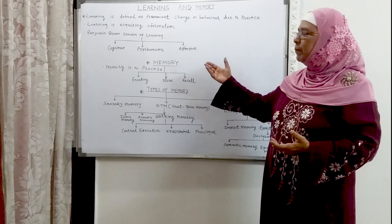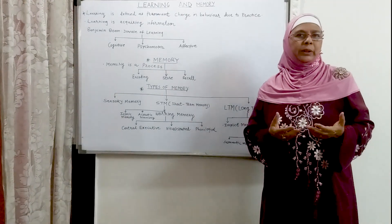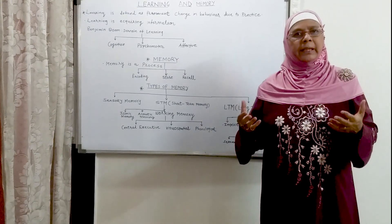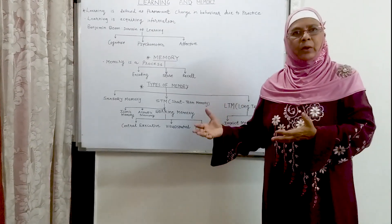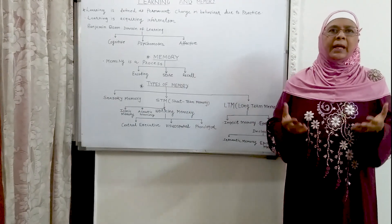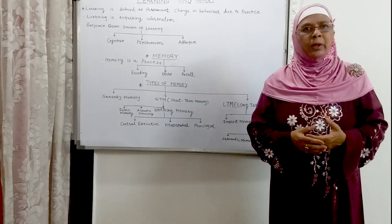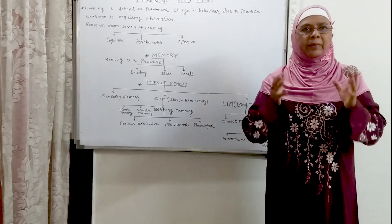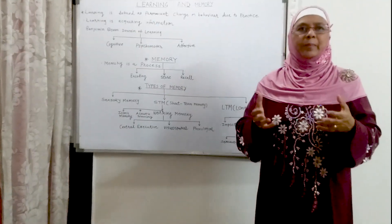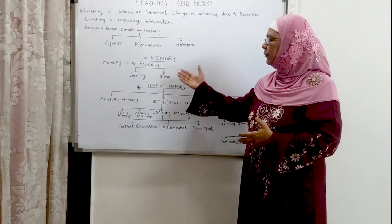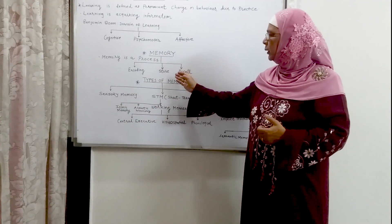Let us come to memory. Because whatever we learn, where does it go? It goes into our memory storage. Some psychologists say there is only one storage of memory, but others say there is a multi-storage system. There is still a debate going on. Let us understand how what we have learned gets processed in memory. There are three ways: first is encoding, second is storing, and third is recall.